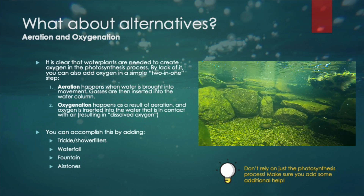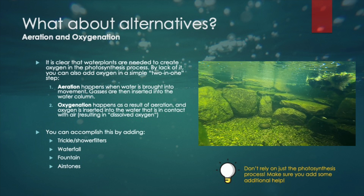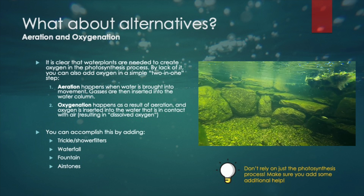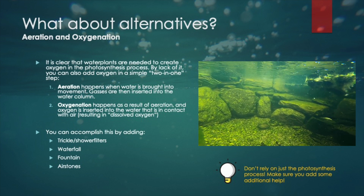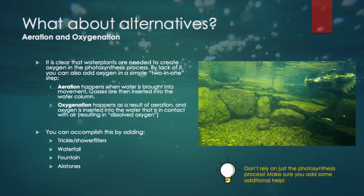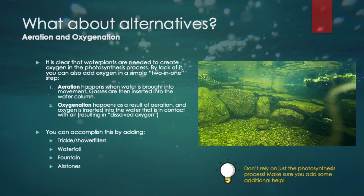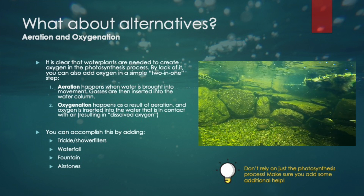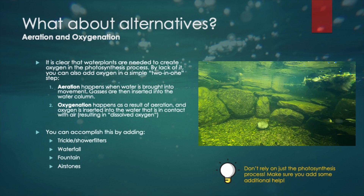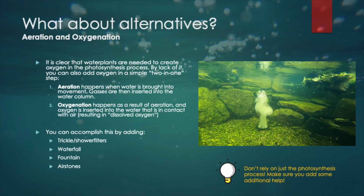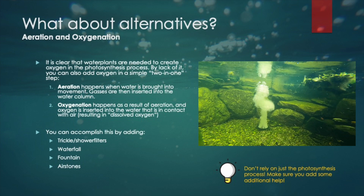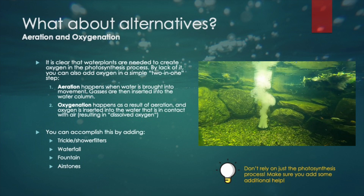It is practically impossible to over-aerate your pond, as there is a maximum amount of oxygen water can hold at certain water temperatures. However, too much aeration can cause carbon dioxide to be gassed out of the pond, causing severe pH fluctuations. This is an unwanted situation and must be prevented.